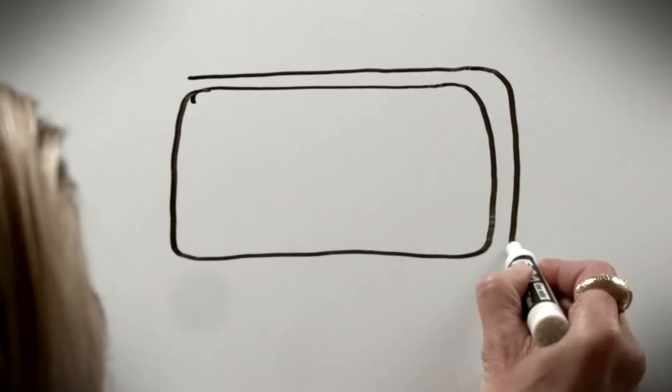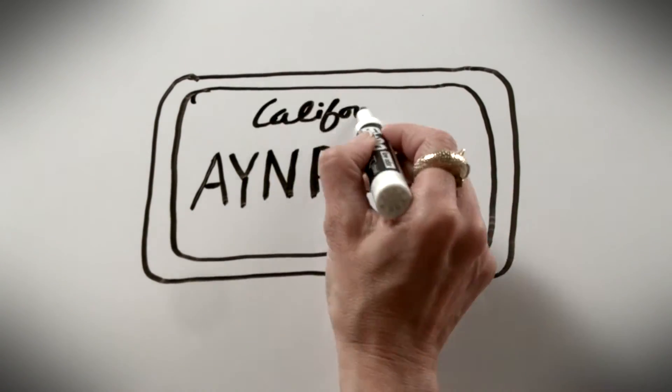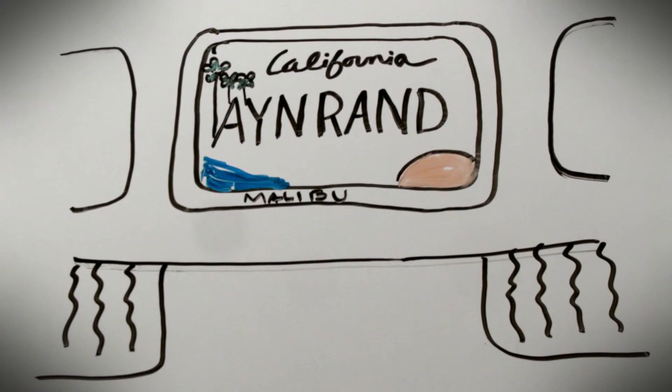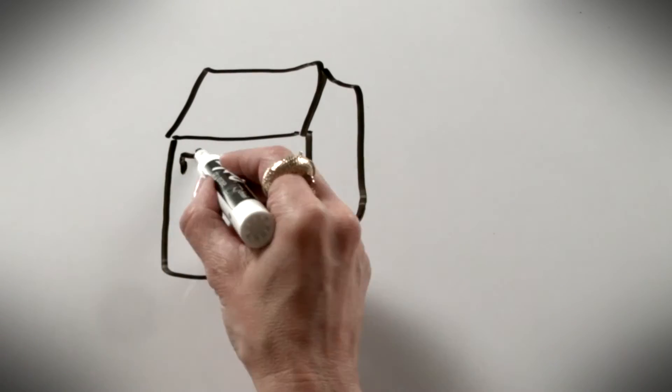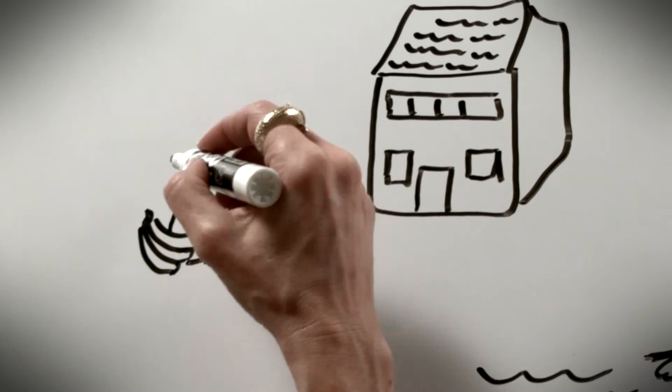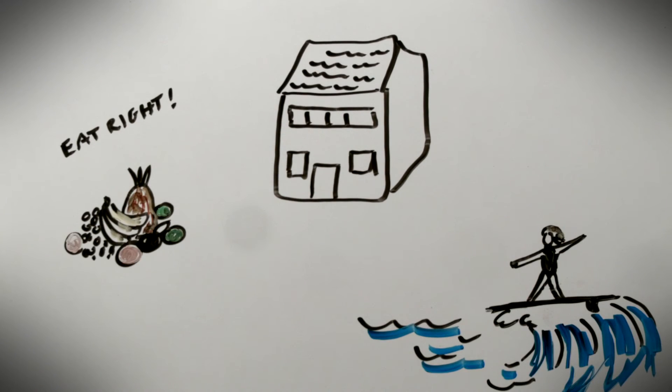So I changed my license plate to Ayn Rand and set out for Malibu, California for a new life and a new job. I bought a house. I learned to surf. I started a nutrition institute. Life was good.